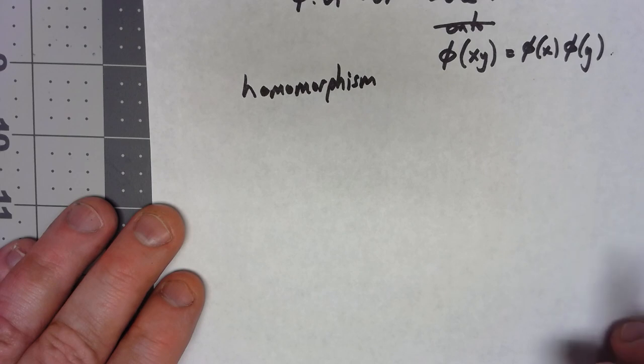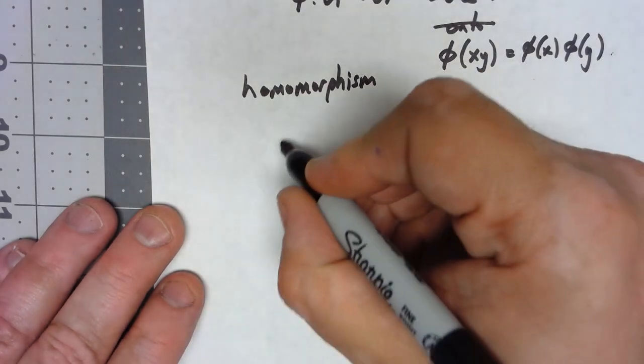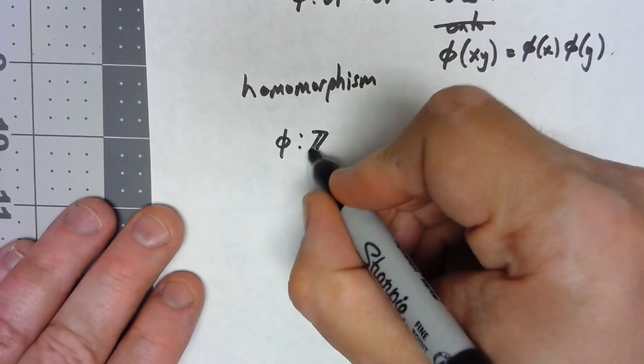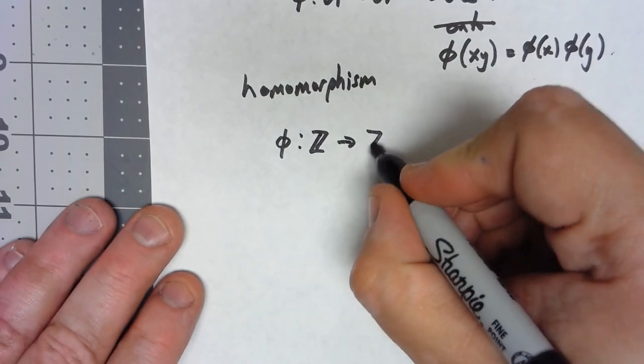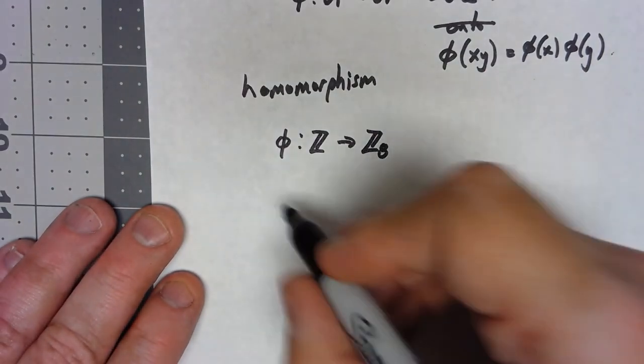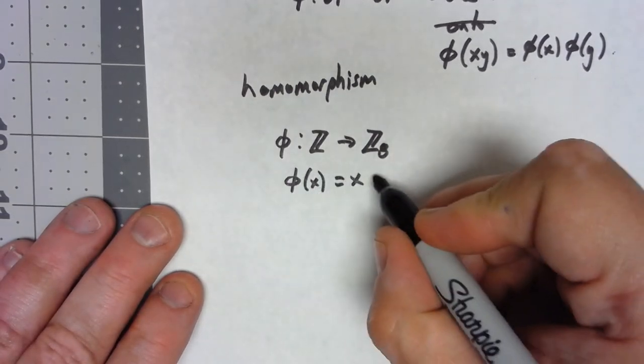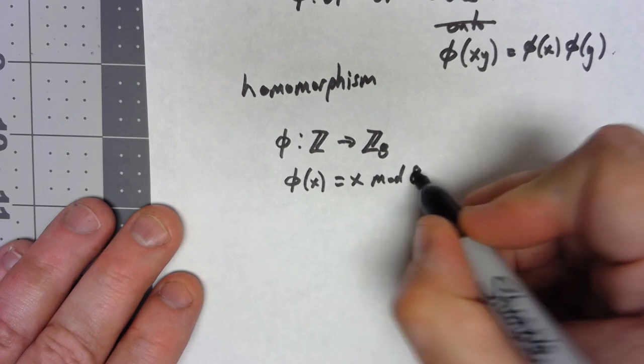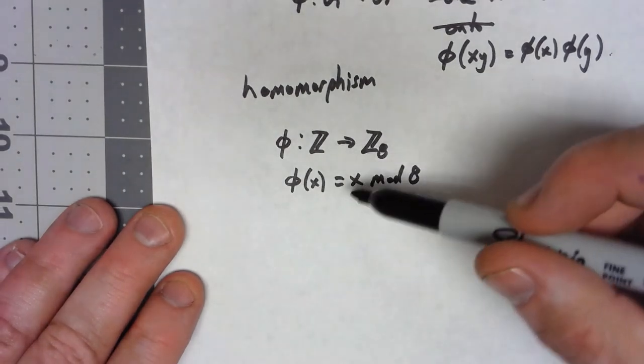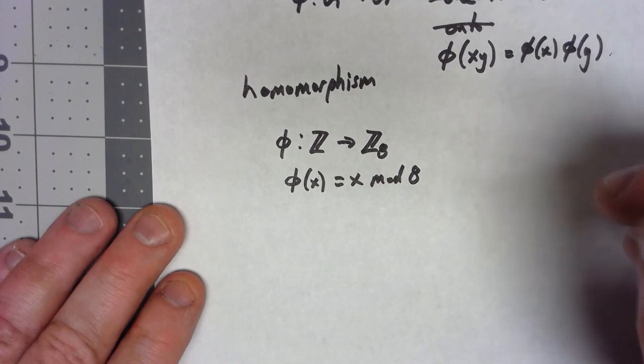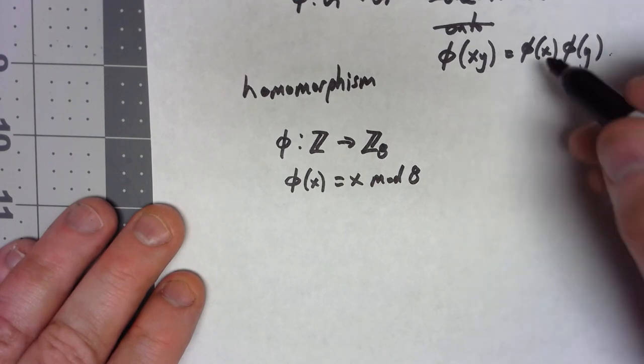So for example, I can say I've got phi going from the integers to Z8 defined by phi of x is equal to x mod 8. Now certainly that function goes from Z to Z8, no problem, but does it have this homomorphism property?